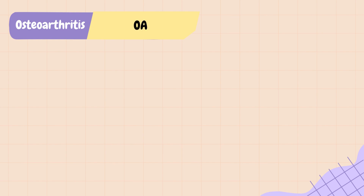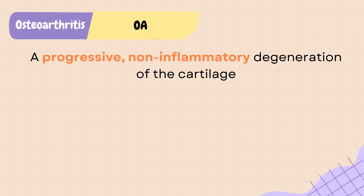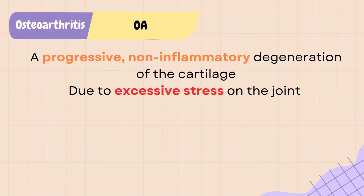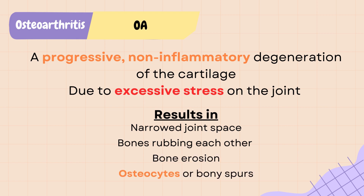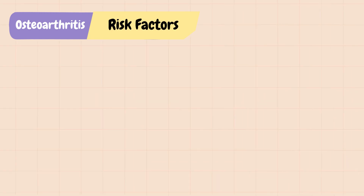Osteoarthritis, or OA, is the most common type of arthritis. OA is a progressive non-inflammatory degeneration of the cartilage due to repeated excessive stress on the joint, resulting in narrowed joint space and bones rubbing each other, causing pain. Progression of OA can lead to bone erosion and development of osteophytes, or bony spurs.